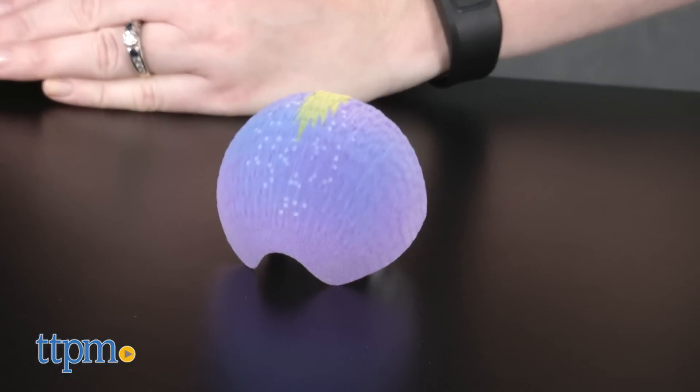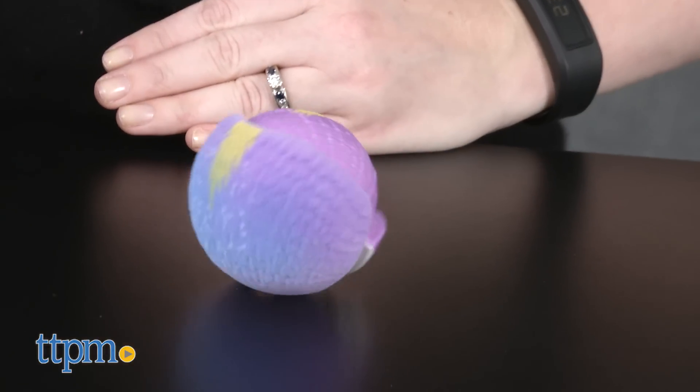If it runs into an obstacle too many times, it will curl up into a ball to take a rest before resuming exploring.